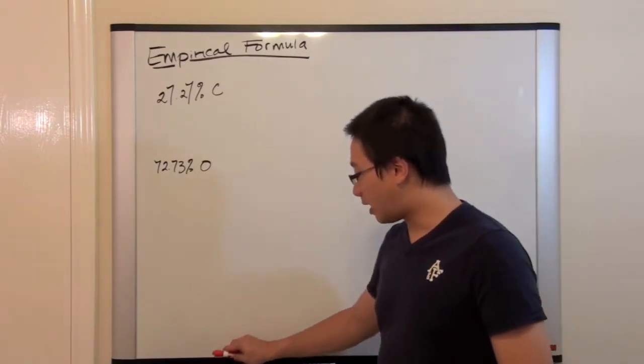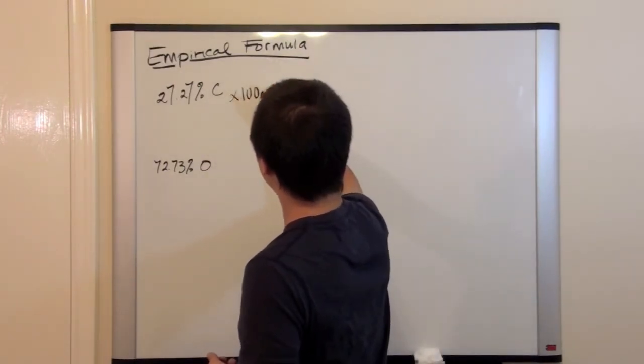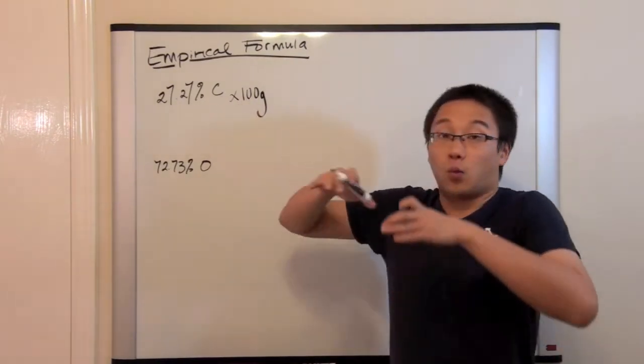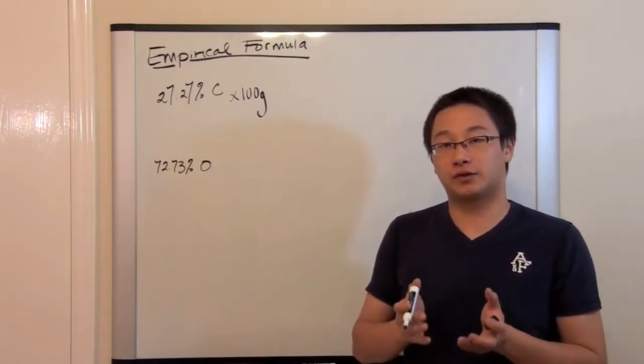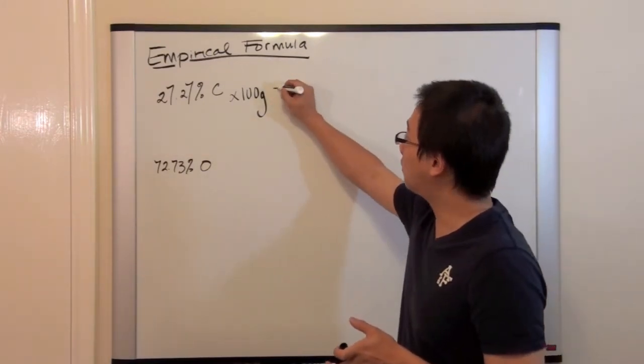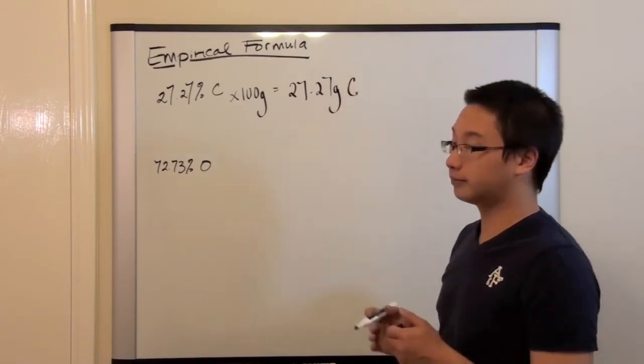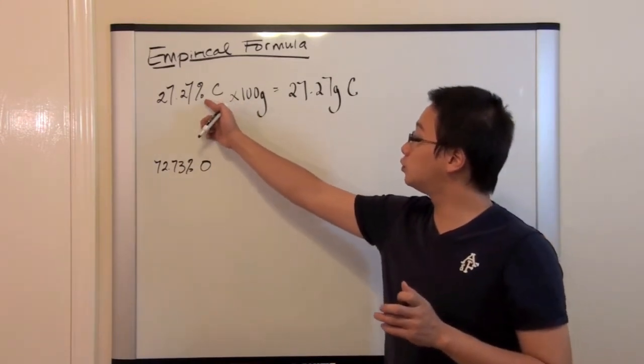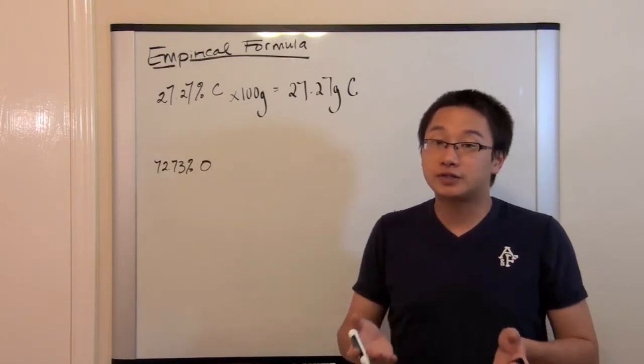When we assume 100 grams of the compound, so this is what happens. When we have 100 grams of the compound and within this 100 grams of the compound we have 27.27 percent the carbon. So if we calculate this what we will get is 27.27 grams of the carbon. So by using 100 grams we can simply convert the sign from percentage to grams. This is very simple.